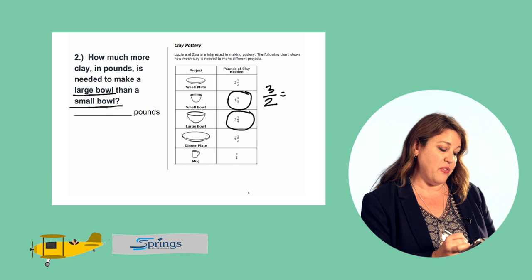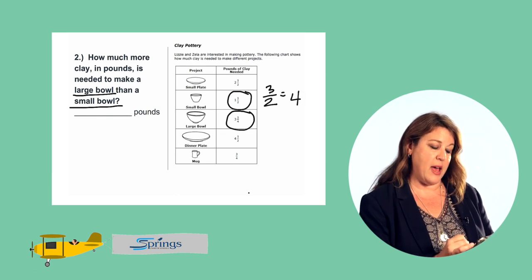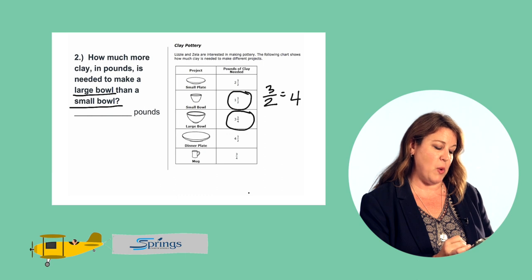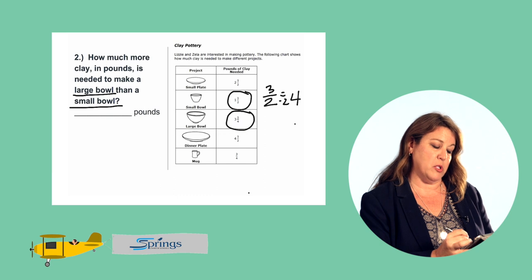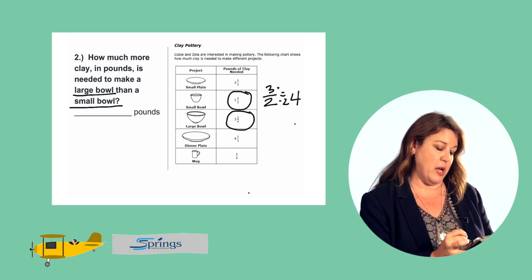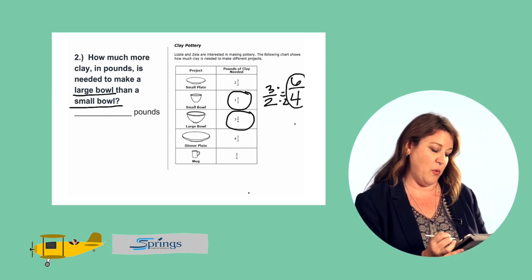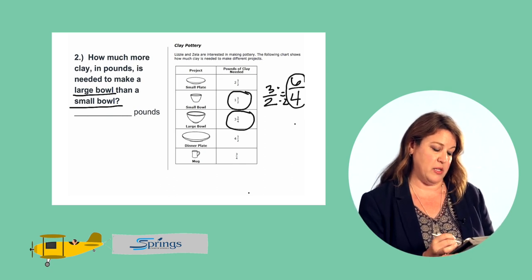And we want to convert that to fourths. And so if we're changing halves to fourths, two times what equals four? Two times two. So if we're going to multiply the denominator by two, we also have to multiply the numerator by two. So three times two is six. So three halves is equal to six fourths. So it takes six fourths pounds of clay to make a small bowl.